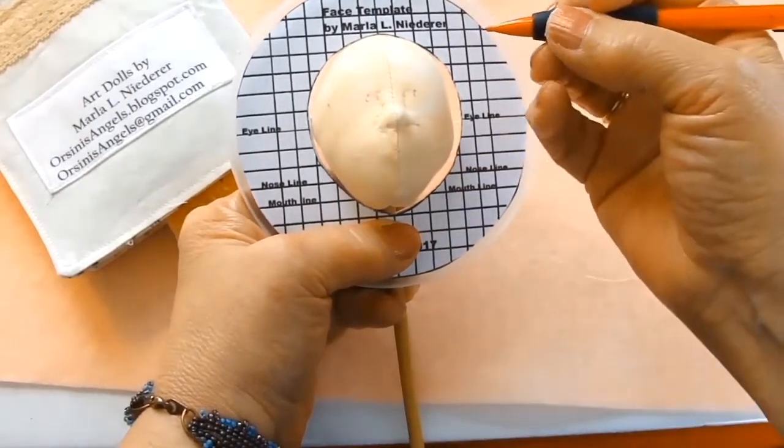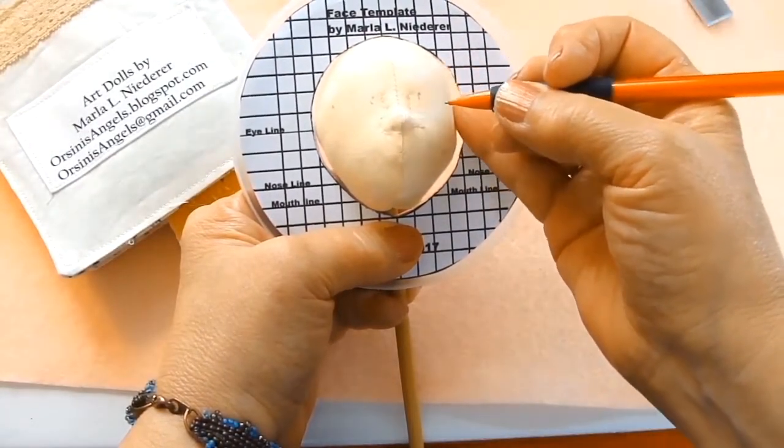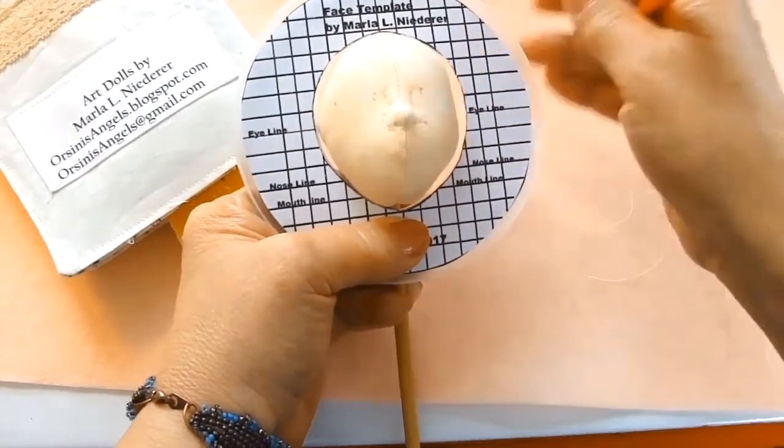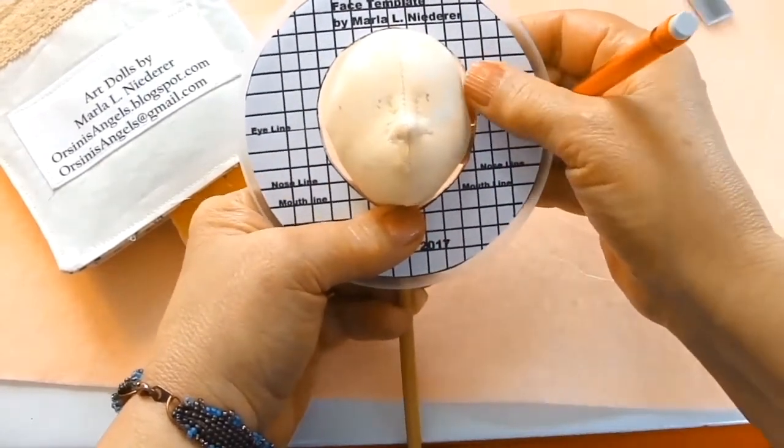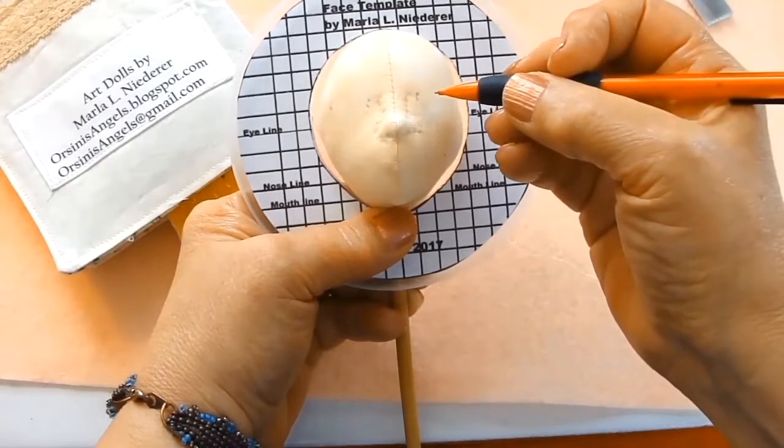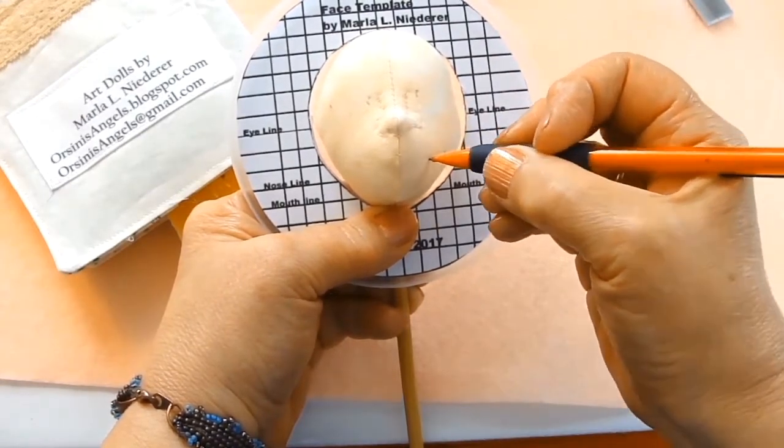As an artist, you can determine wherever you'd like to place your facial features. If you want a more childlike face, you put the eyes lower. If you want a more adult-like face, you put them higher.